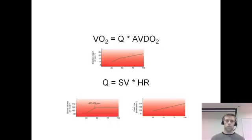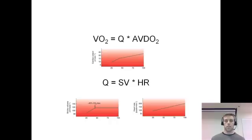Stroke volume in milliliters per beat, times heart rate in beats per minute, gives you cardiac output in liters per minute. If you work out the units in the equation, the beat terms cancel out, and you're left with milliliters per minute — that is your cardiac output in liters per minute.